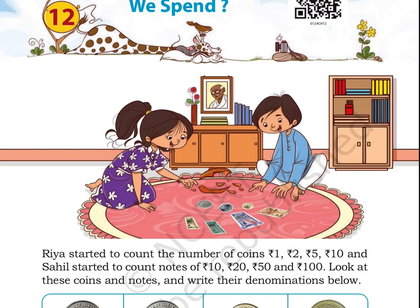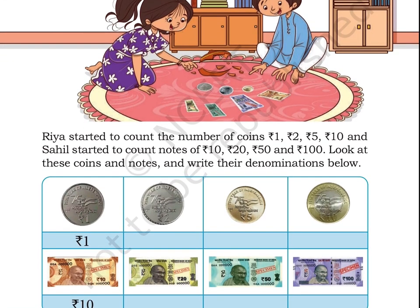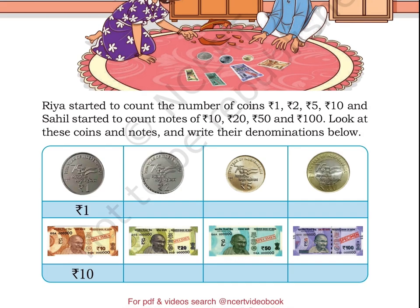Observe these coins and notes and write their denominations below. Here we have a table. In this table, first we have a 1 rupee coin — Rupee 1 is written underneath it. Next to it, we have 3 more coins; you have to identify their denomination and write it below them. In the second row, we have currency notes. First we have a 10 rupee note — 10 rupees is written underneath it. After that, we have 3 more currency notes; you have to identify their denomination and write it below them.